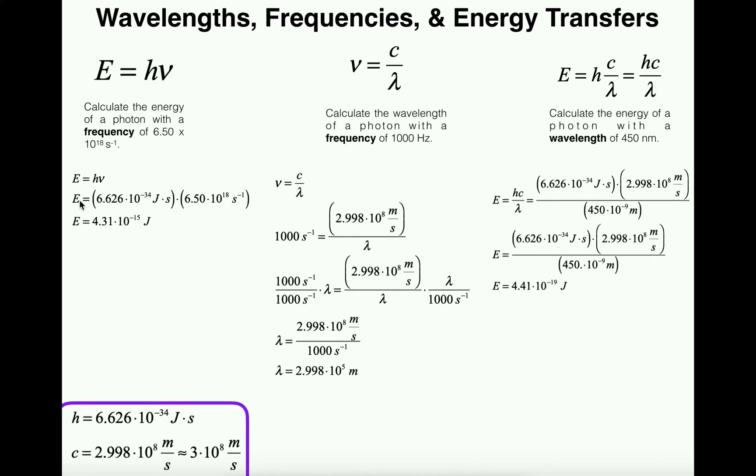Our energy in this case would be equal to 6.626 × 10⁻³⁴ joule seconds multiplied by the frequency 6.5 × 10¹⁸ per second. I've already calculated this and it turns out that the energy of this one photon is 4.31 × 10⁻¹⁵ joules.